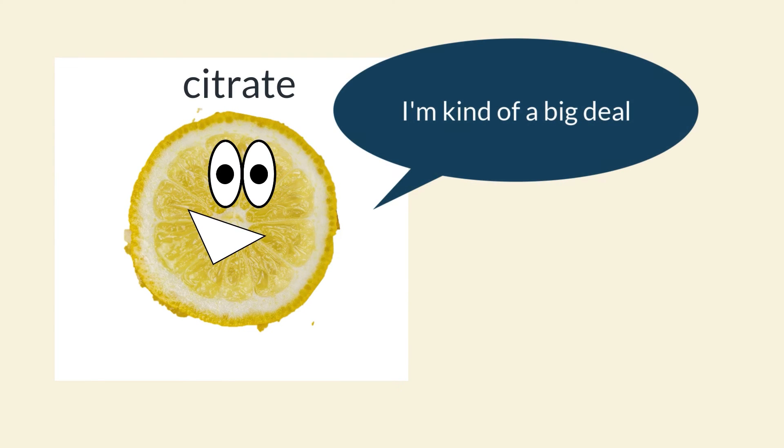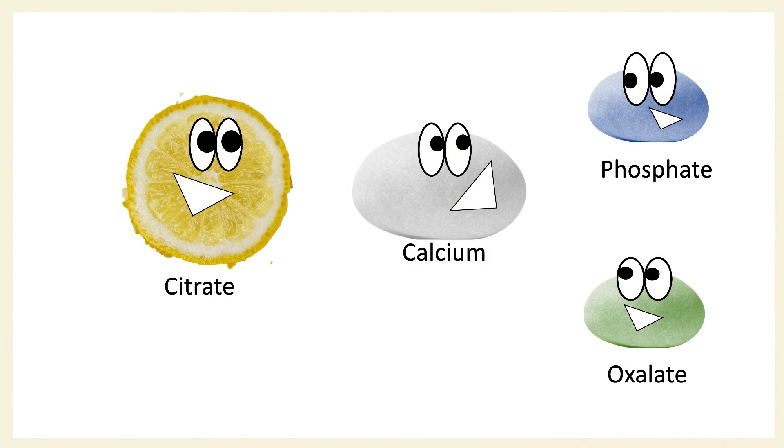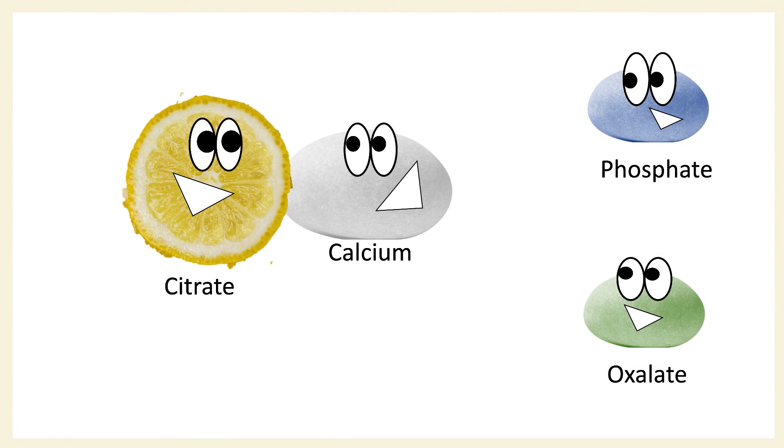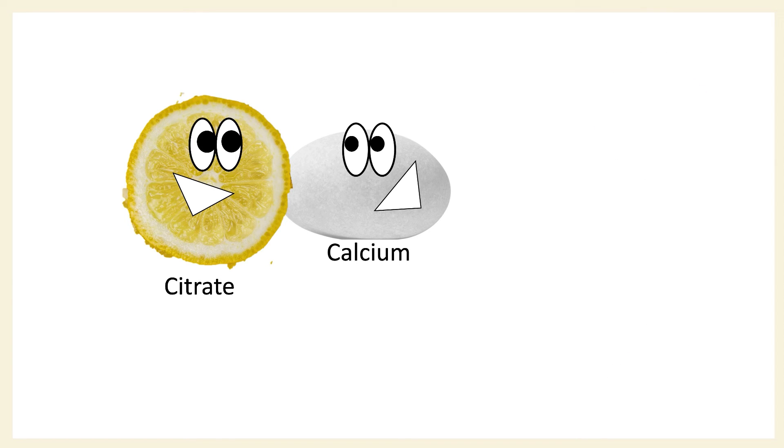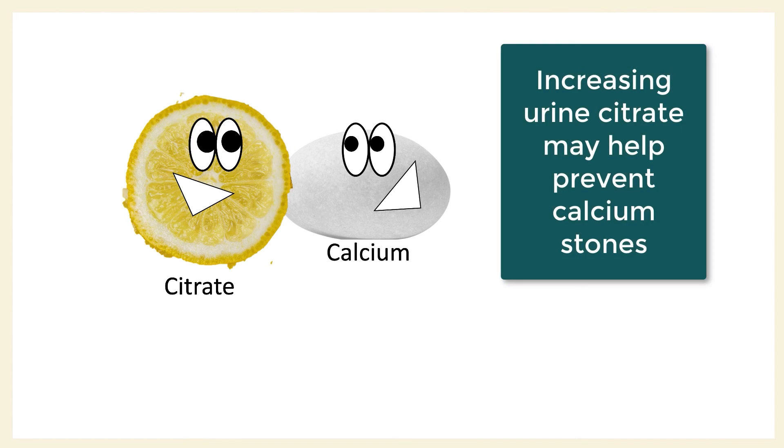This is all about citrate. Citrate is multifaceted. Aside from its effect on urine pH, citrate binds to calcium, preventing it from binding to other things like oxalate or phosphate. So if someone is a calcium stone former and they have low urine citrate, we'll aim to increase the amount of citrate in their urine so that there's plenty of citrate to bind to the calcium and prevent calcium stones.